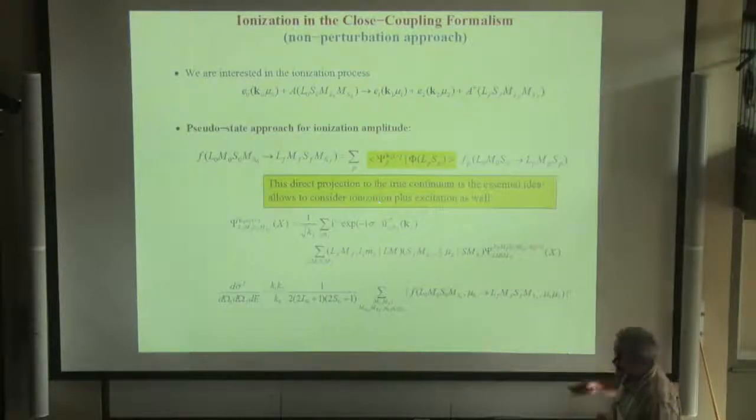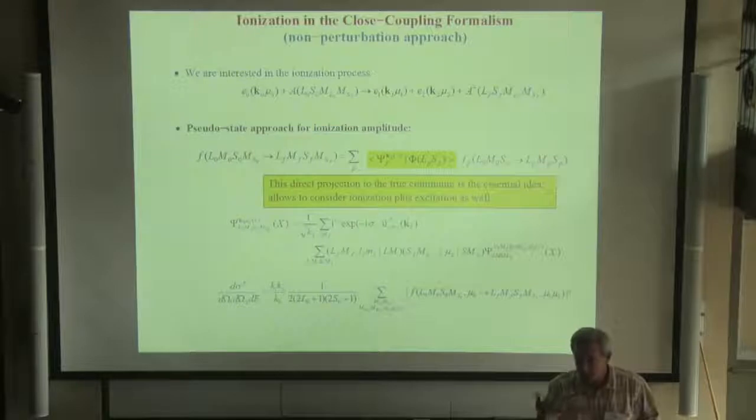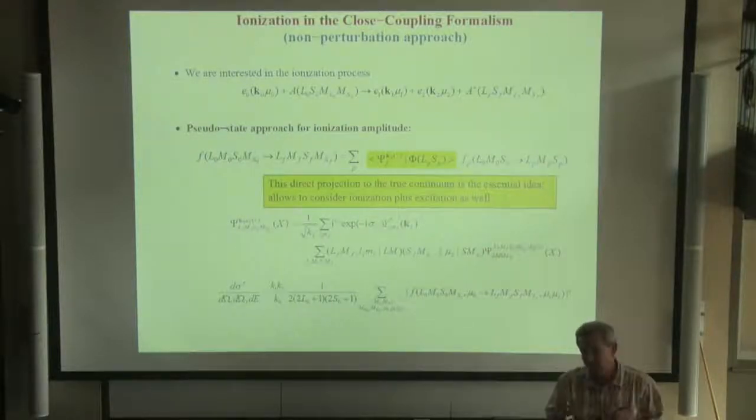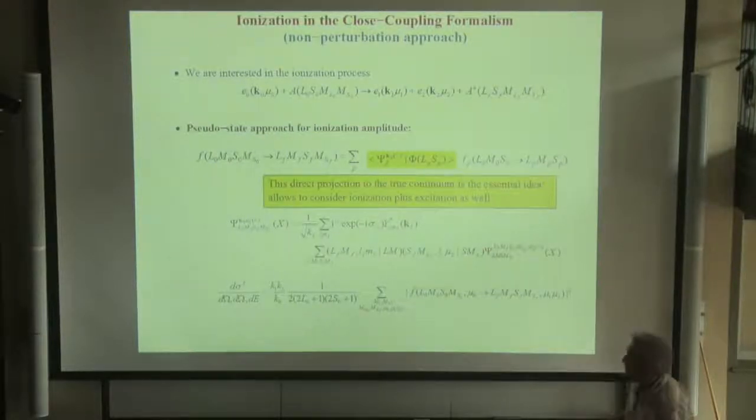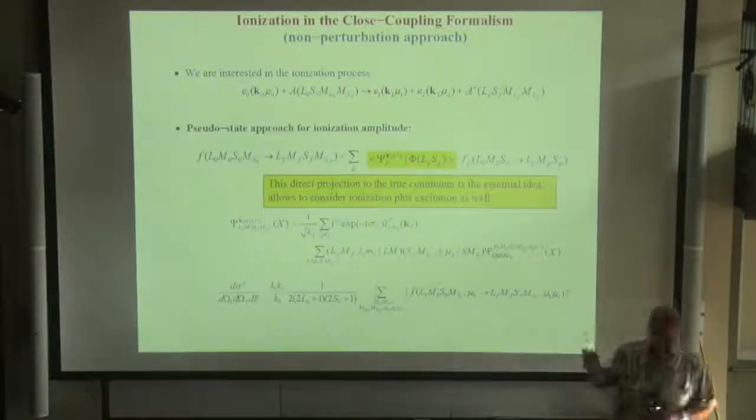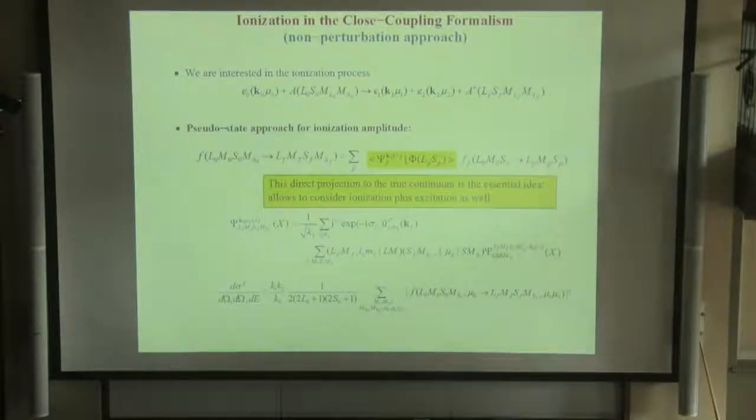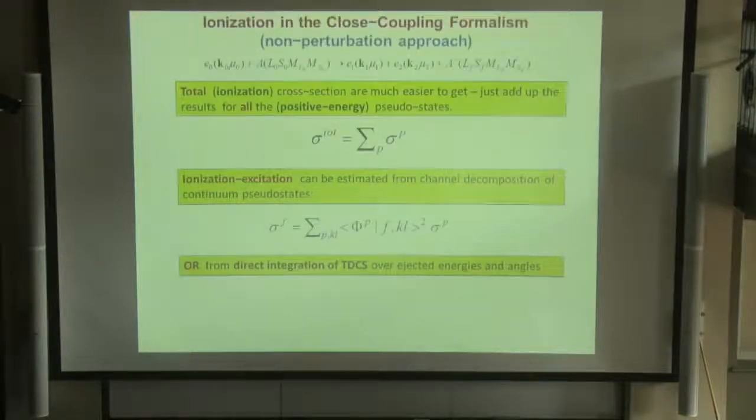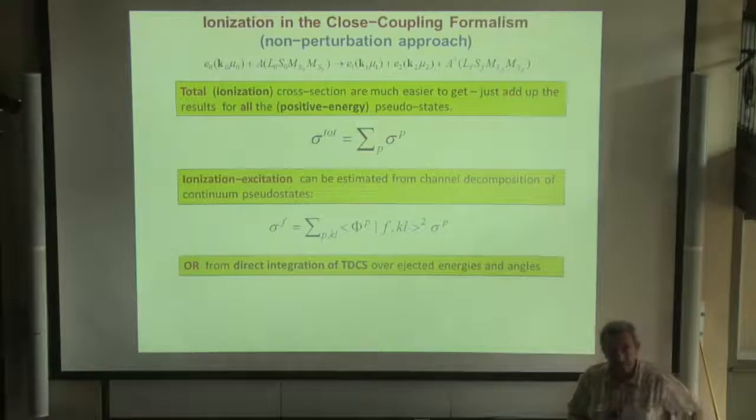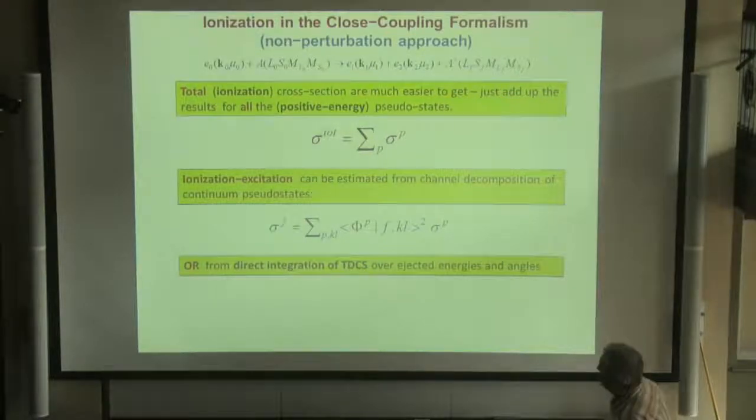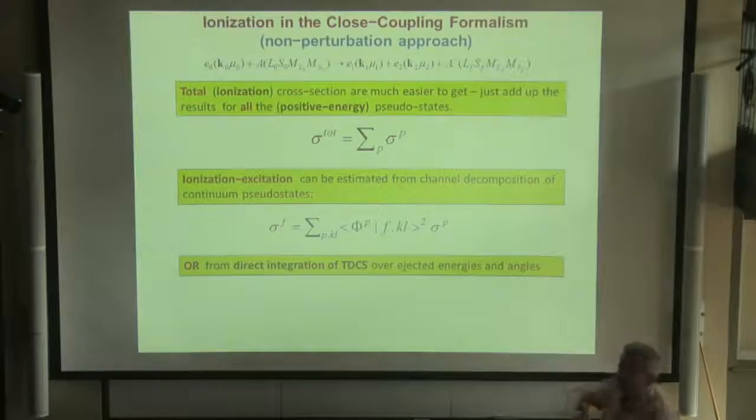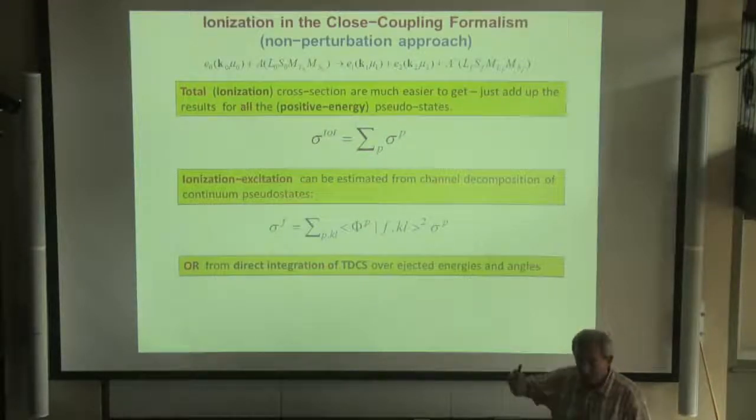This projection technique is the CCC using interpolation between two pseudo-states. But total cross-section, of course, can be obtained much more cheaply. For example, just add up the results for excitation of all continuum pseudo-states.